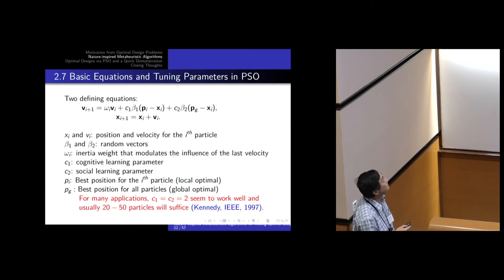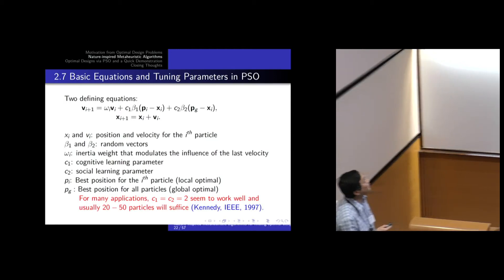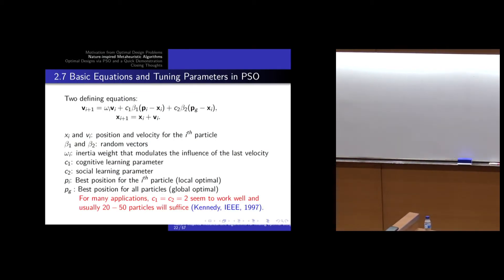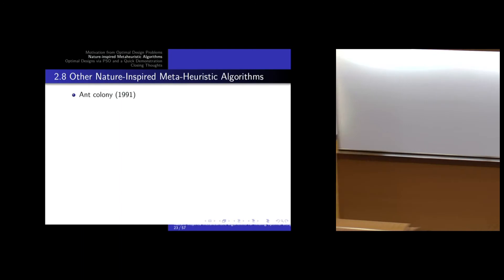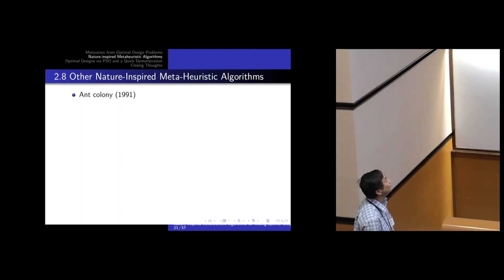All these algorithms have tuning parameters, and one challenge is knowing what values to input. One reason PSO seems popular is that its two default values work very well — consistently reported by other researchers, and I find them to work amazingly well, except in one case. Once you implement and let it run, it converges to what you're looking for.